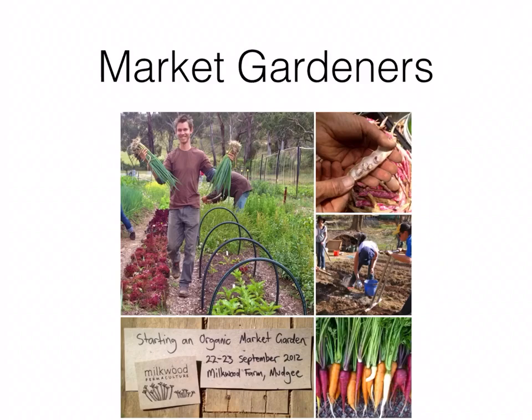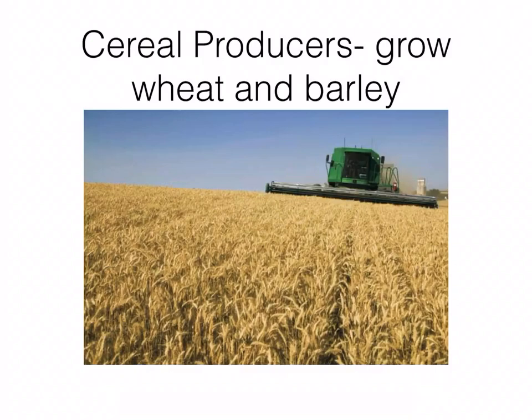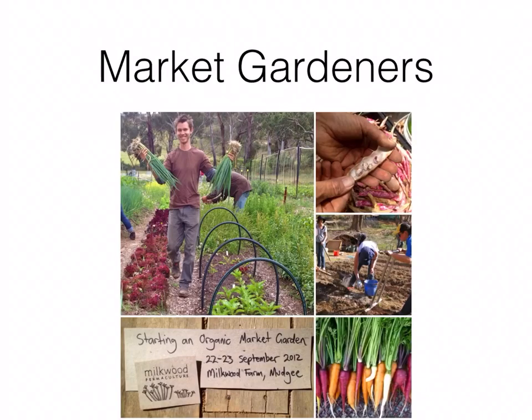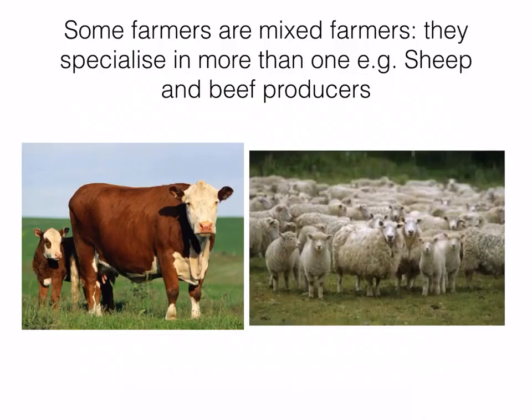Most farms in Ireland specialize in one type of farming - they're either a dairy farmer or a beef producer. Up in Dublin you get a lot of market gardeners, who grow crops, fruit, veg, and flowers. You typically find market gardeners located close to cities because things like flowers are fresh and have a limited lifespan, so you want to produce them close to the customer. Cereal producers grow wheat for bread and barley for other products.